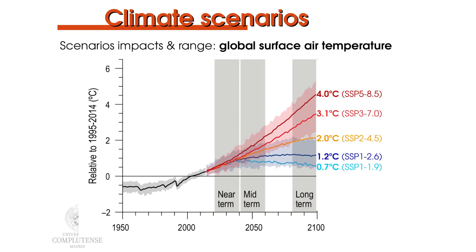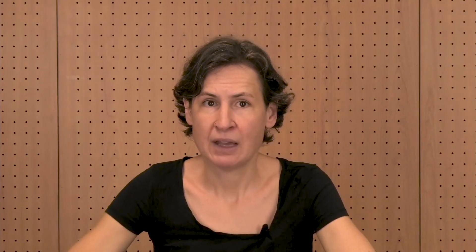However, inside each scenario there is also a range of possible outcomes. For instance, for SSP 3-7.0, the average expected change by 2100 is 3.1 degrees Celsius, but the models also show a range of possible changes spanning from 2.2 to 4.7 degrees Celsius. I hope you now have a better understanding of current climate scenarios that can help you navigate through the rest of the course. Thank you for watching.